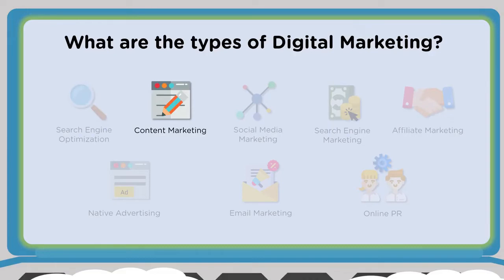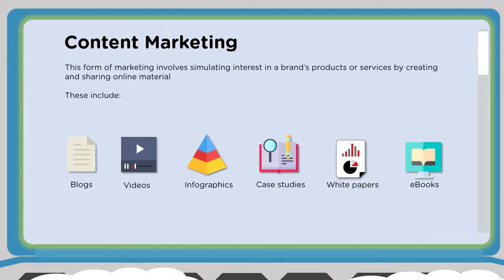Let's move from search engine optimization to content marketing. Content marketing involves stimulating interest in a brand's products or services by creating and sharing online material. That online material can come in many forms: blogs, videos, infographics, case studies, white papers, and ebooks — all different forms of content that you want to be able to distribute.